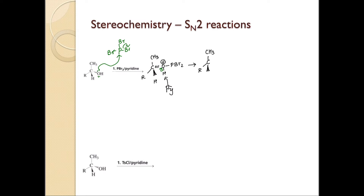So until now there hasn't been any SN2 reaction — this is your intermediate product with a dashed wedge. Now your SN2 reaction happens where Br⁻ is going to come in from a direction opposite to that of the leaving group, and the leaving group is going to leave. Here is your leaving group.